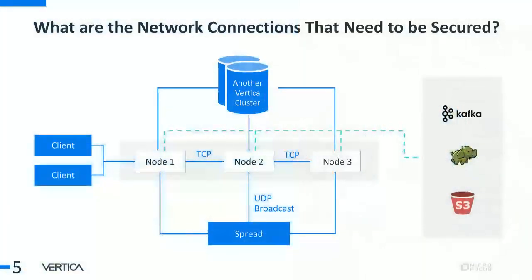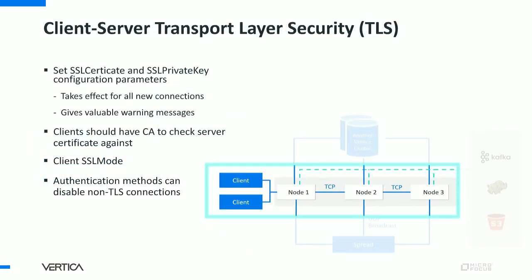How do you protect your data in transit? Vertica makes a lot of network connections. The important ones are: clients talk to a Vertica cluster, the Vertica cluster talks to itself, it can talk to other Vertica clusters, and it can make connections to a bunch of external services. First, let's talk about client-server TLS — this is how you secure data between Vertica and clients. It prevents an attacker from sniffing network traffic and picking out sensitive data. Clients have a way to configure how strict the authentication of the server is, called the client SSL mode.